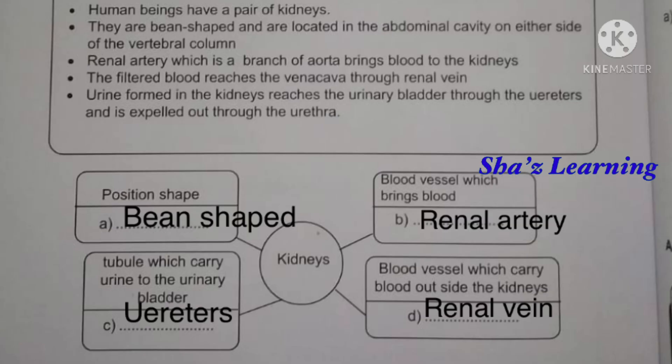Next, we have a word web about the kidney. The kidney is bean-shaped. The blood vessel which brings blood to the kidney is the renal artery. The blood vessel which carries blood out of the kidney is the renal vein. The tubule which carries urine to the urinary bladder is called the ureter.